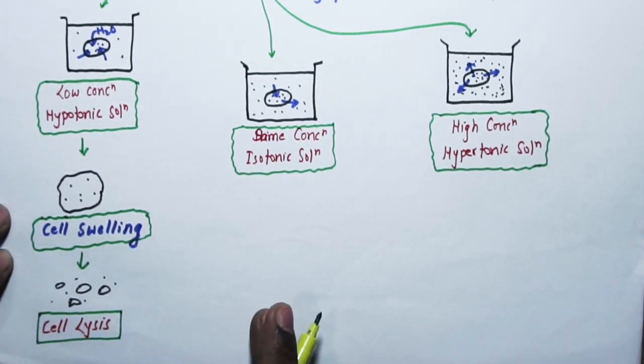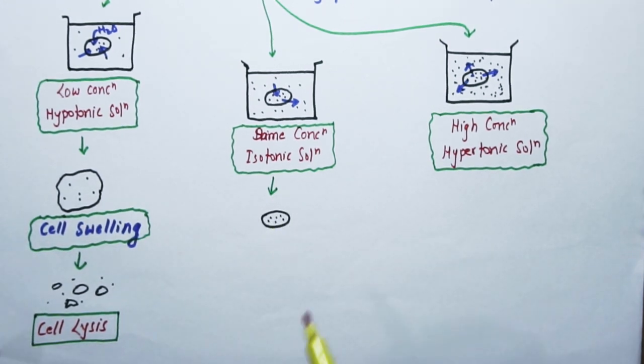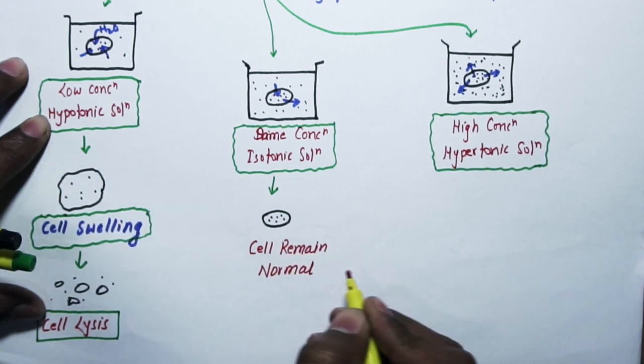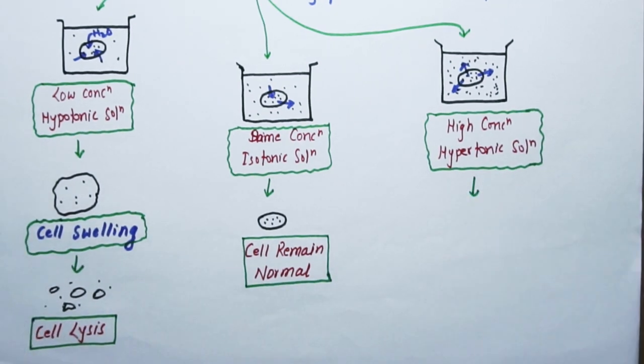A time will come where the cell will blast—that is called cell lysis. In the second situation, whatever water is coming inside the cell, the same amount of water is going outside. Equilibrium is maintained and the cell remains normal.